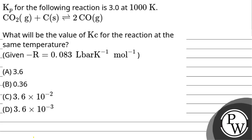Let's read out this question. Kp for the following reaction is 3 at 1000 Kelvin. The reaction is: CO2 plus carbon in solid state is in equilibrium with 2 moles of carbon monoxide. What will be the value of Kc — the equilibrium constant for the reaction at the same temperature? The value of R is given as 0.083 L bar per Kelvin per mole.